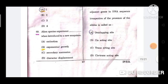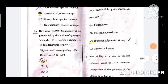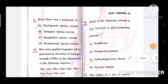Question 69: Alien species experience -- when introduced to a new ecosystem? The correct answer is B, exponential growth. Next is 70: Which of the following enzyme is only involved in gluconeogenesis pathway? The correct answer is C, 3-phosphoglycerate kinase.